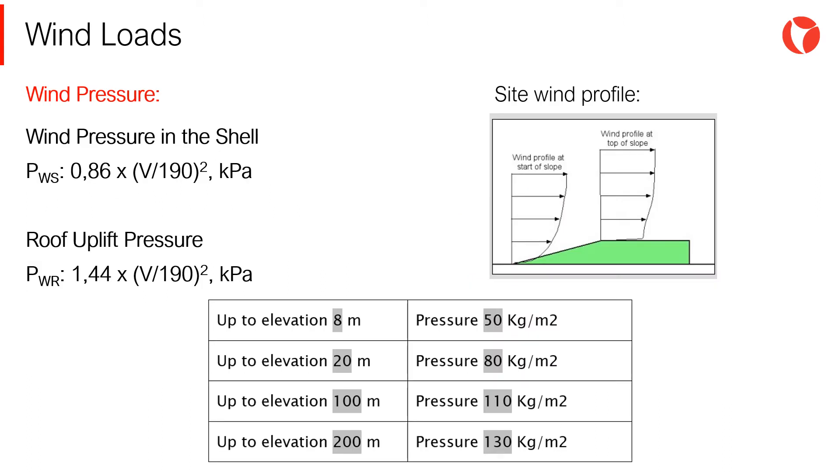Wind pressure design values for each component of the tank, according to the API 650 code and considering the form factor and desired criteria are shown on the screen. Additionally, the side wind profile needs to be considered.